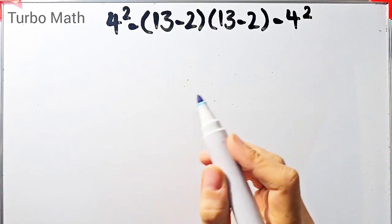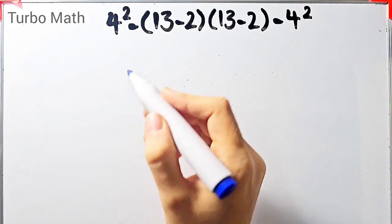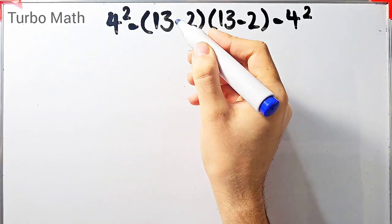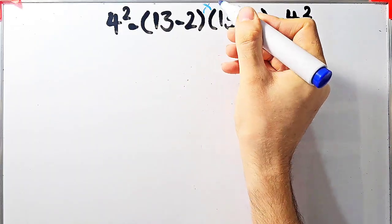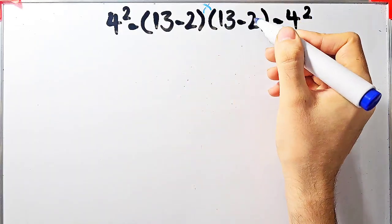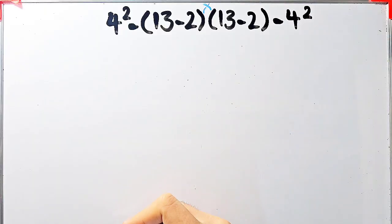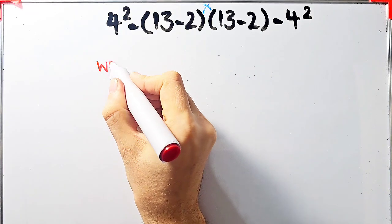The first question is: 4 to the power of 2, minus open parentheses 13 minus 2 close parentheses, then times open parentheses 13 minus 2 close parentheses, minus 4 to the power of 2. What is the answer of this question? Some people start from the left and they don't pay attention to the priority of the mathematical operations.